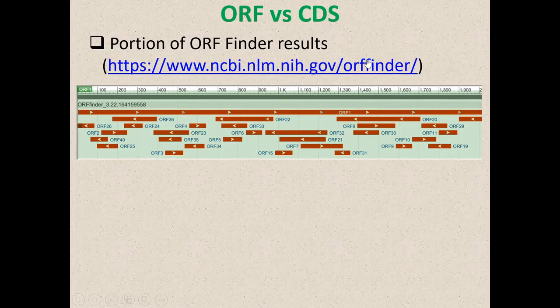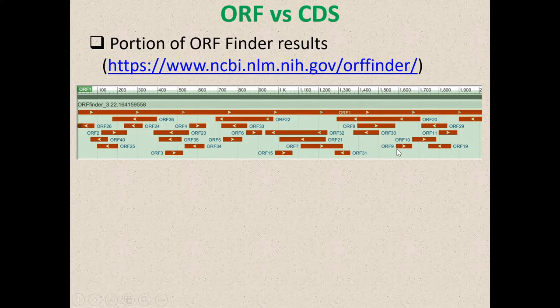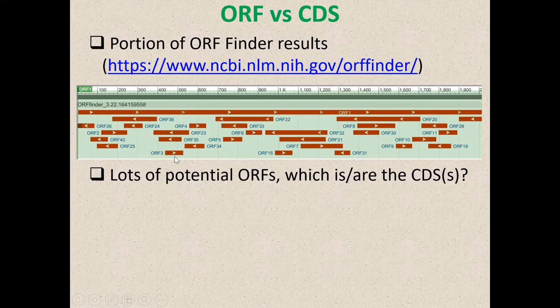Here's a piece of software I don't recommend you use: ORF finder. It's nice and shows useful information, but this is a region which I happen to know only has one coding region in it. Yet if you look for open reading frames, you will find vast numbers going from right to left and left to right. The question that comes to mind is which of these is truly the coding sequence. After you've done this a number of times, it becomes relatively easy to pick out the CDSs from the ORFs.